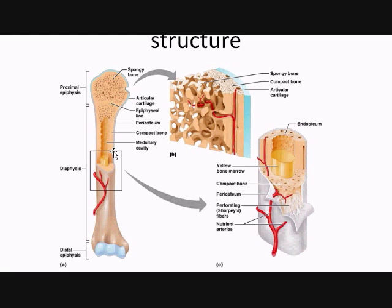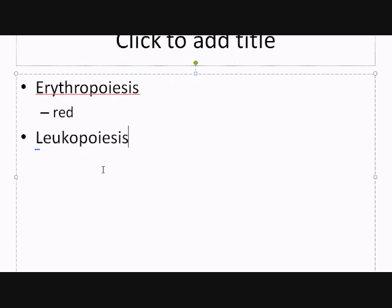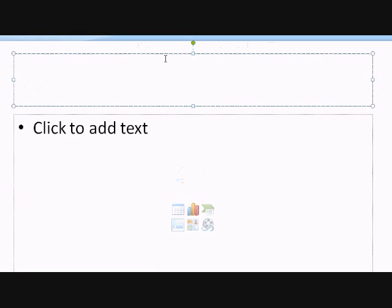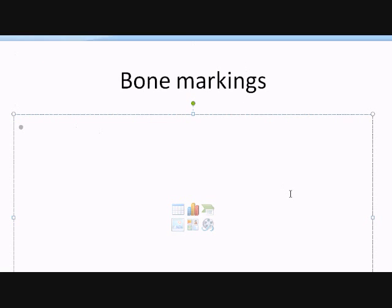We already covered the endosteum if I'm not mistaken, and we also covered parts of the bone structure already. So we're going to take a little shift and try to cover some fractures for medical terminology. Actually, before we cover fractures, let me do some bone markings, because this can be very important. Bone markings can be one of the hardest sections for a lot of students to pick up.